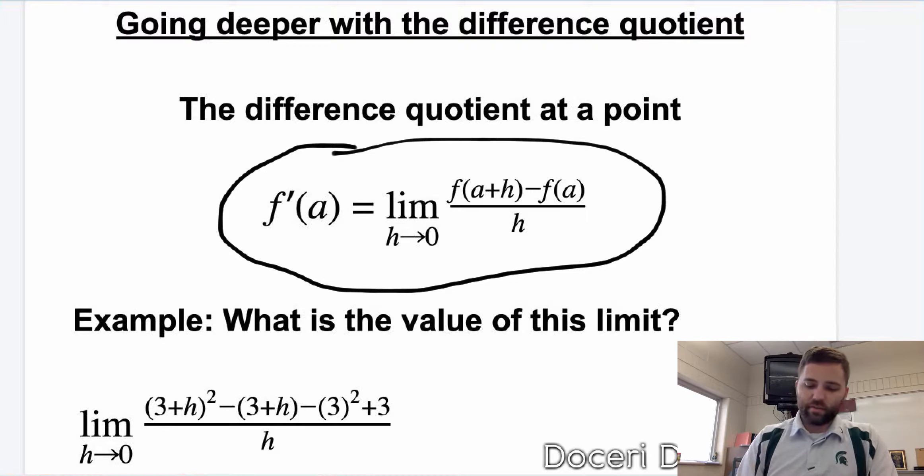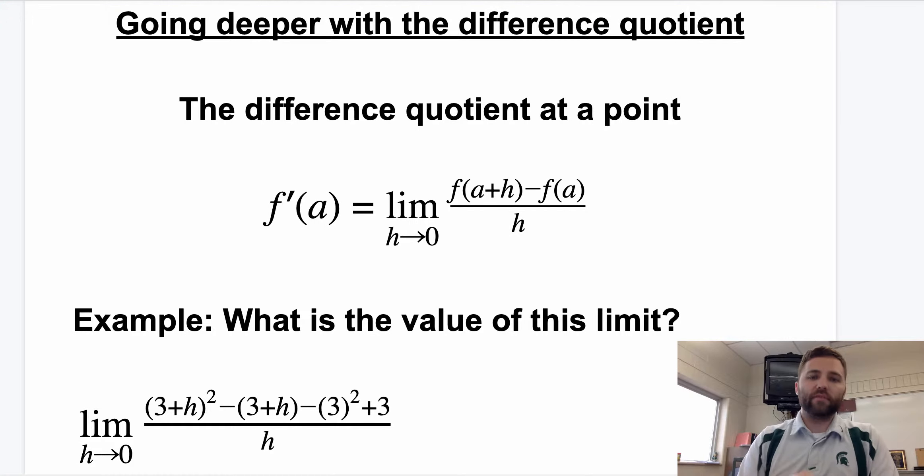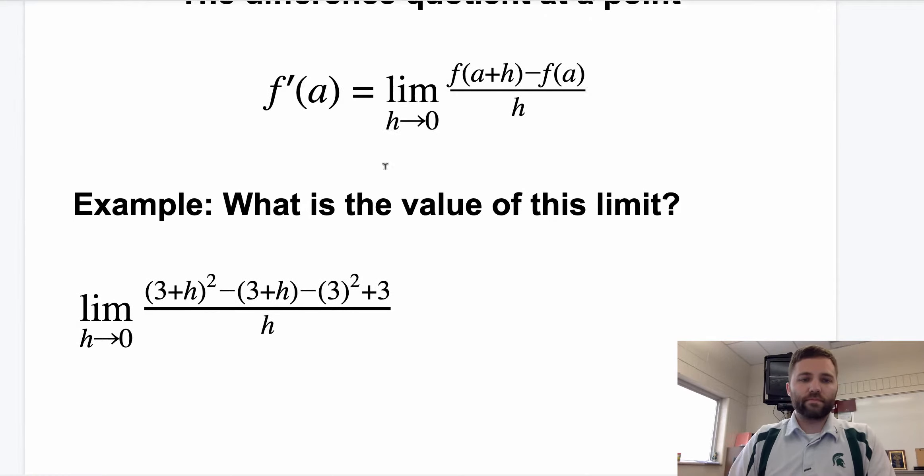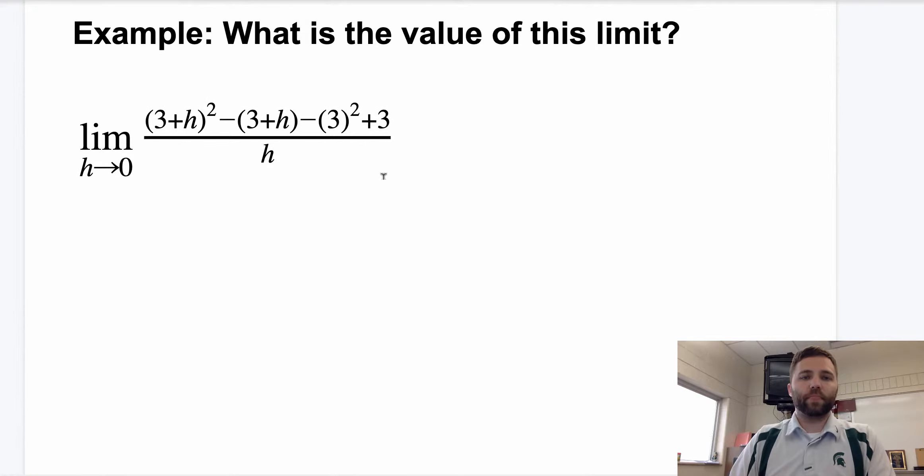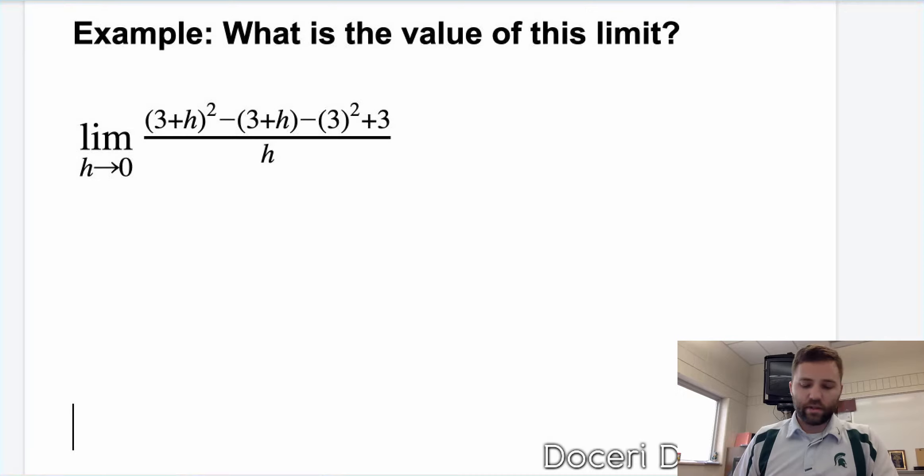If we look at the problem we have, if we can identify what a is and we can identify what the function is, then we can just take the derivative of the function. Just looking at this and knowing the definition of a derivative, it looks like a is going to be 3.